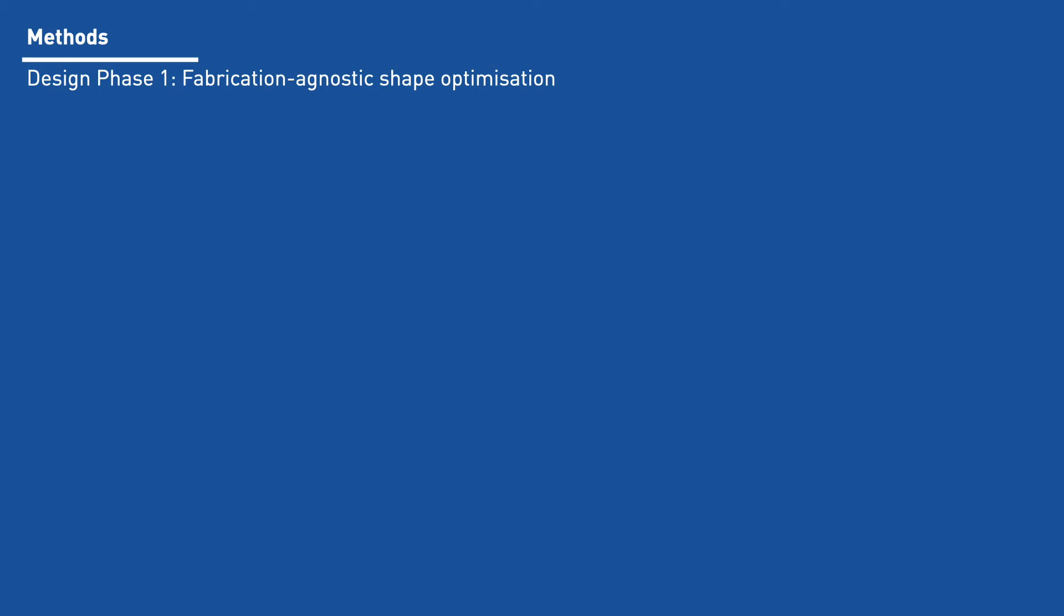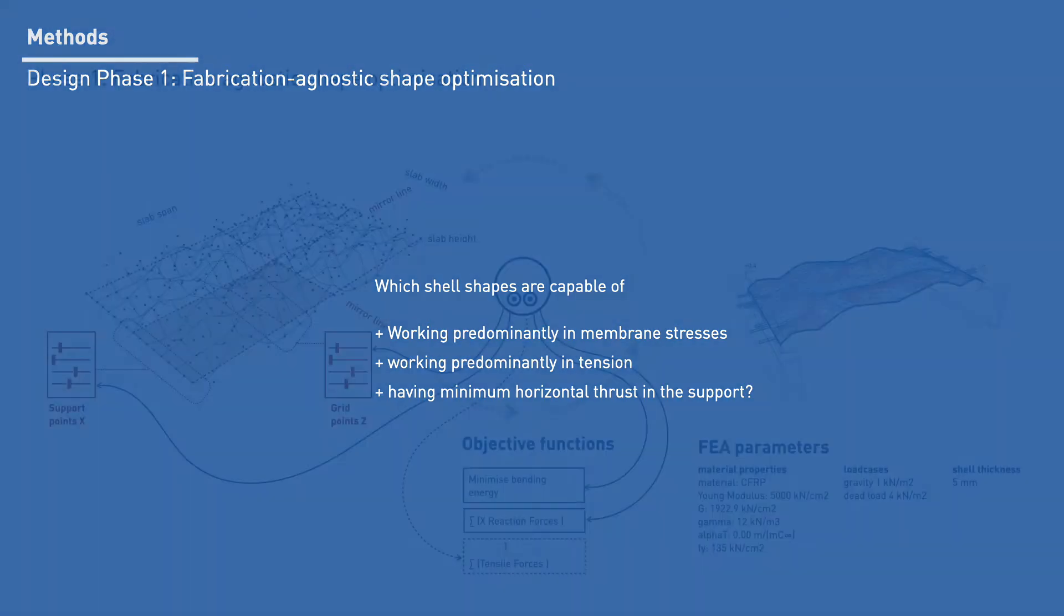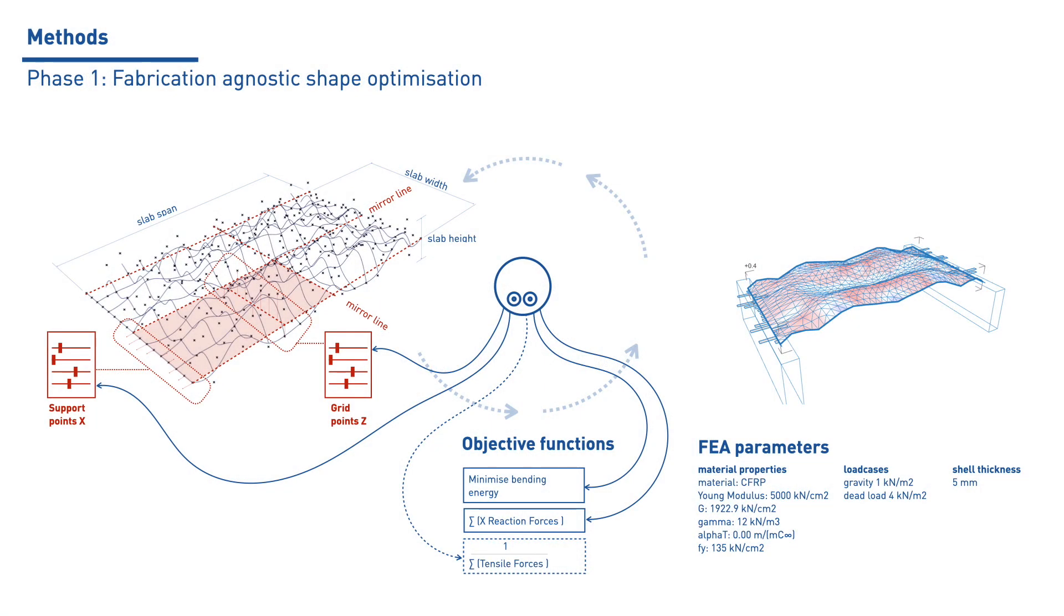Fabrication-agnostic shape optimization. The first approach to shape optimization is meant to cast light on shell designs that can deliver global bending strength using the shelling membrane, predominantly in tension, and that exert minimum horizontal thrust to the supports. For this, a NURBS surface is defined by a grid of points whose Z position is controlled by a multi-objective genetic algorithm, or MOGA.